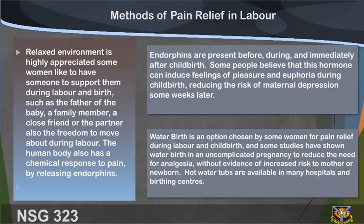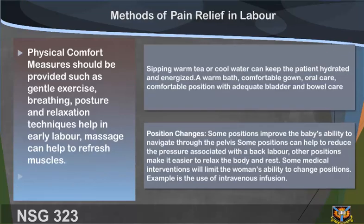Hot water tubs are available in many hospitals and birthing centers. Physical comfort measures should be provided, such as gentle exercise, breathing, posture, and relaxation techniques, which help in early labor. Massage can help to refresh muscles. Sipping warm tea or cool water can keep the patient hydrated and energized. A warm bath, comfortable gown, oral care, and comfortable position with adequate bladder and bowel care are also recommended.